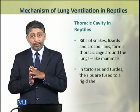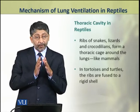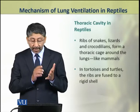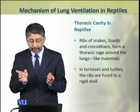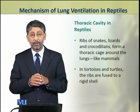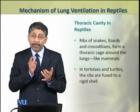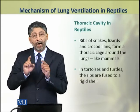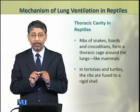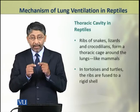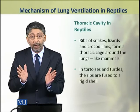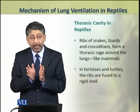Dear students, the snakes and lizards and crocodilians have ribs which form a thoracic cage around the lungs, just like mammals. However, in tortoises and turtles, the ribs are fused as a part of the rigid shell. So, these two groups — turtles and tortoises on one hand, and crocodilians, snakes and lizards on the other — have different mechanisms of breathing.